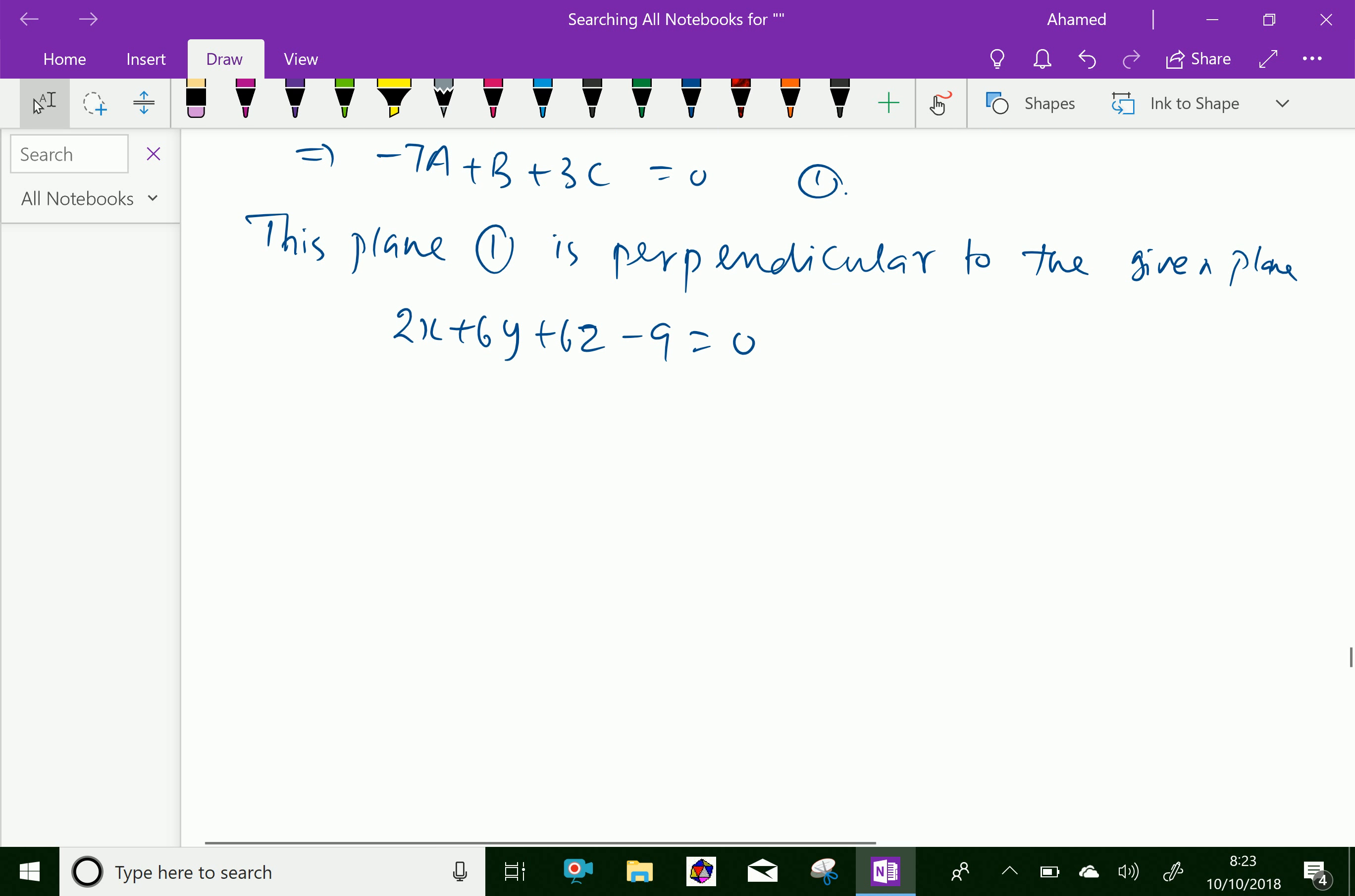Therefore, because this plane is perpendicular to that plane, we can write 2A + 6B + 6C = 0.